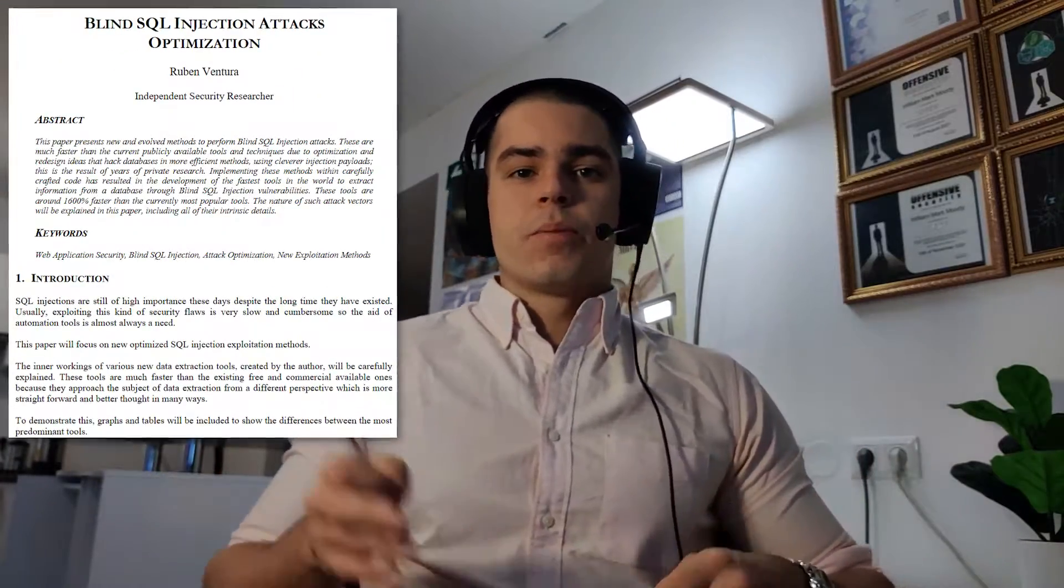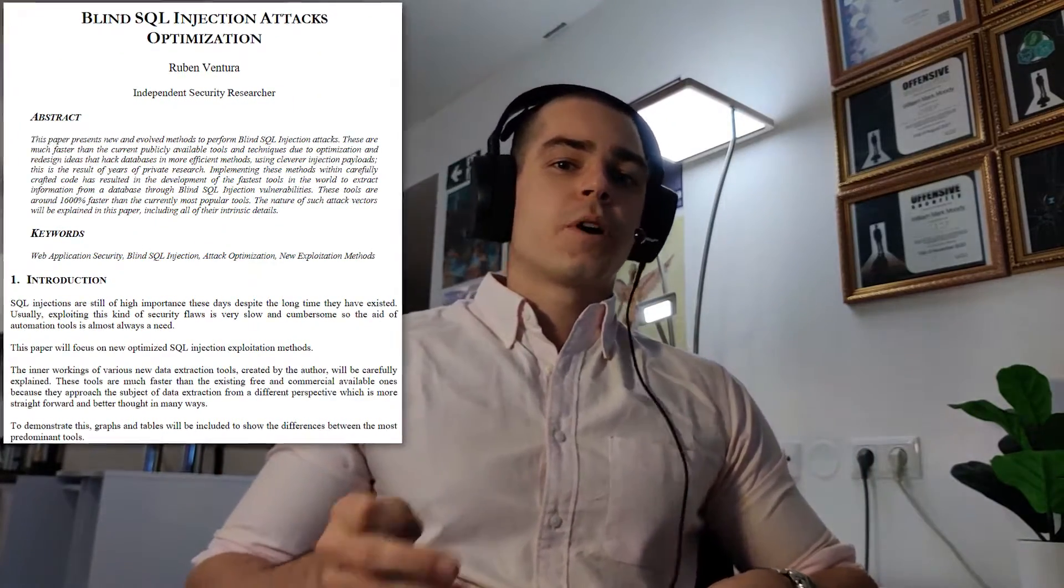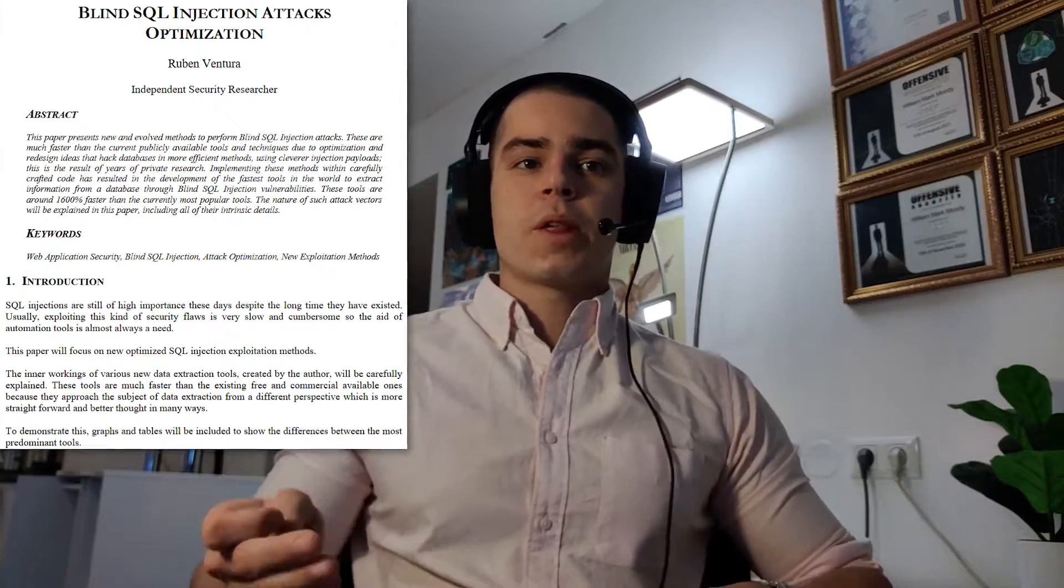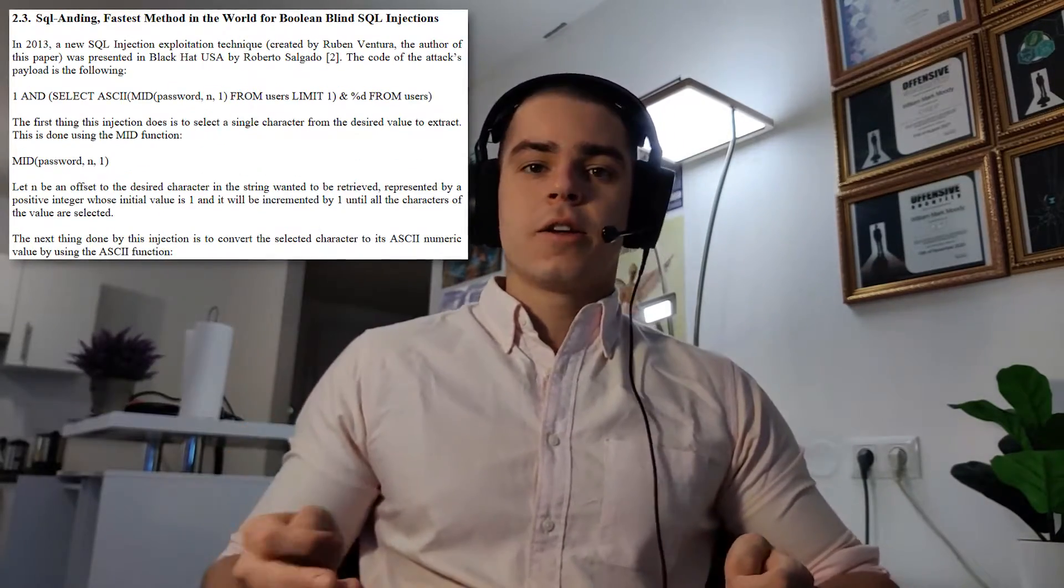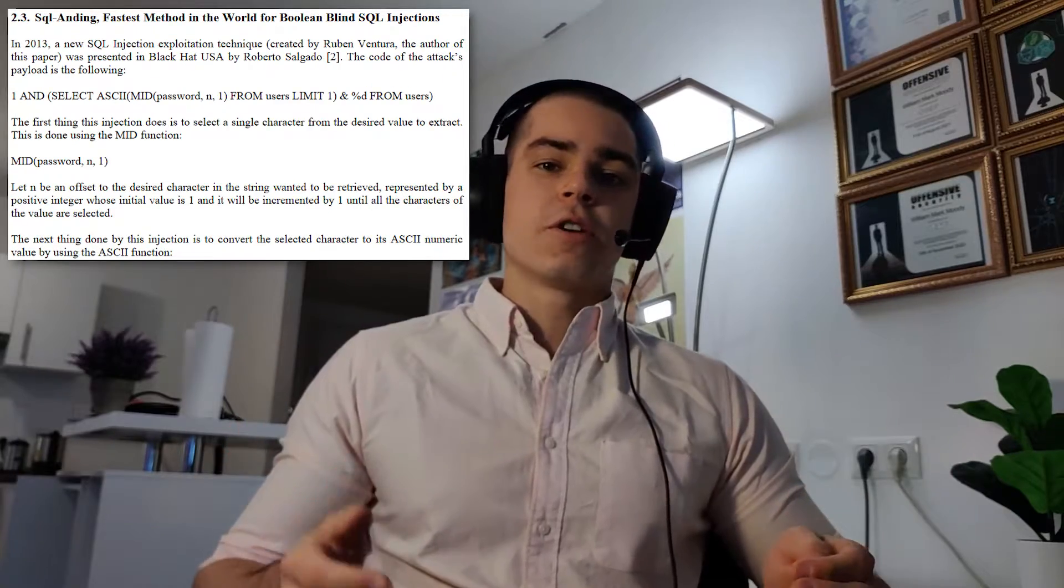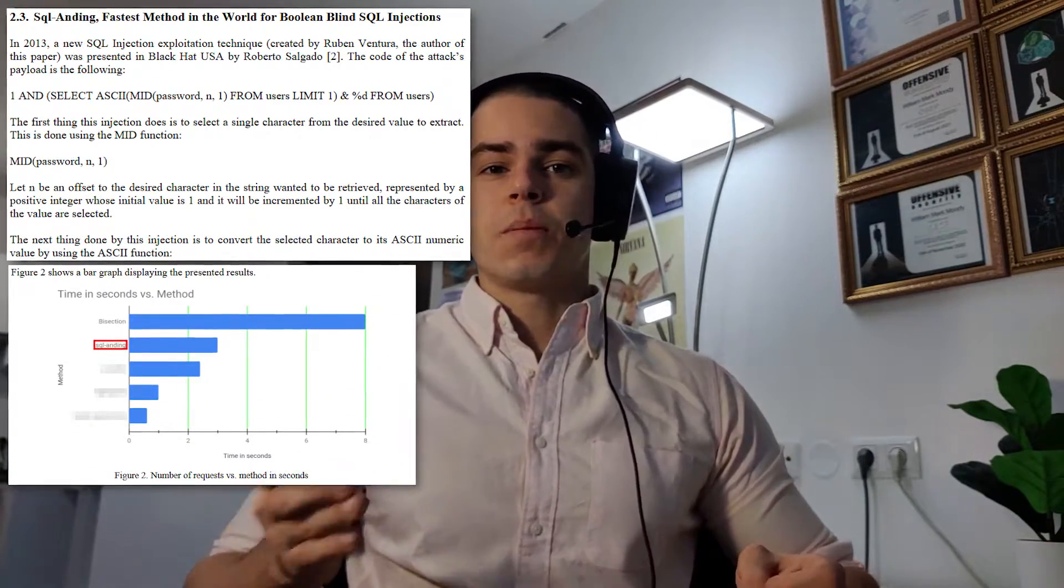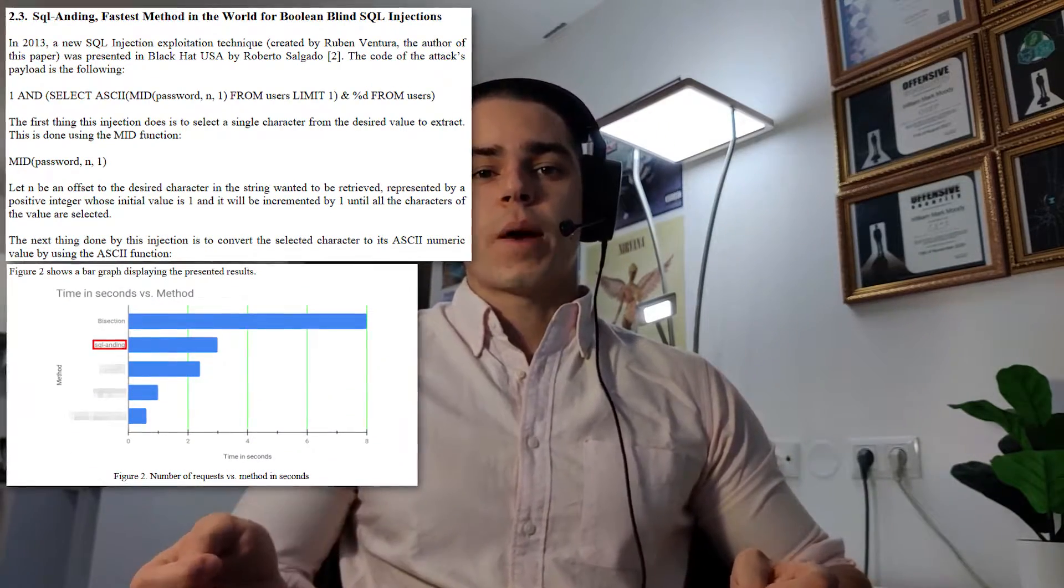Recently, I came across this paper by Ruben Ventura, which compares various blind SQL injection methods. I found out that there's an algorithm named SQL anding, which according to his results runs over two and a half times faster than bisection, which is what SQLMap uses. I was very surprised to hear this, so I wanted to try and recreate these results myself.